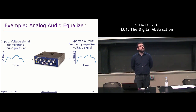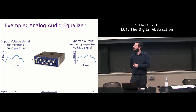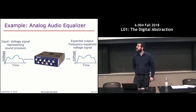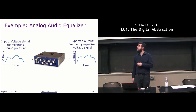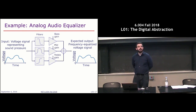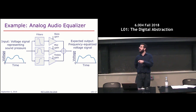Noise is a fundamental problem with any analog system. Consider an audio equalizer — typically an analog system. The input is a voltage signal representing sound pressure, and different knobs let you adjust the gain of different frequency bands: bass, mid-range, treble. Internally, the system has a bunch of electrical components — a low-pass filter, band-pass filter, high-pass filter — each feeding a different amplifier with a gain specified by the knobs, then everything is mixed together to produce the output.